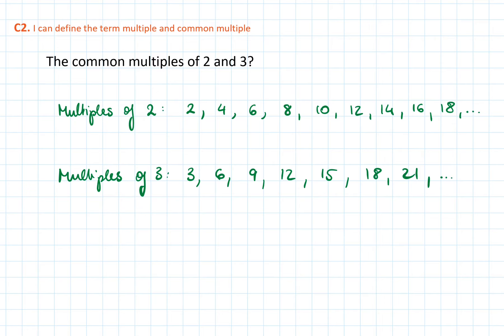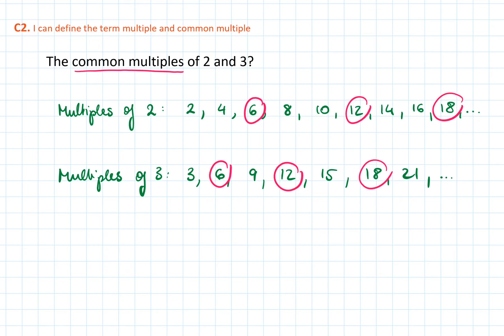The list would go on forever. The multiples of 3 are 3, 6, 9, 12, 15, 18, 21 and so on. We can see that there are some numbers which appear in both lists. These are called the common multiples of 2 and 3.